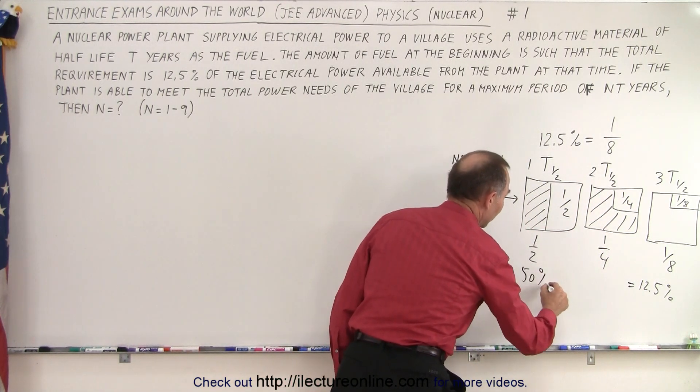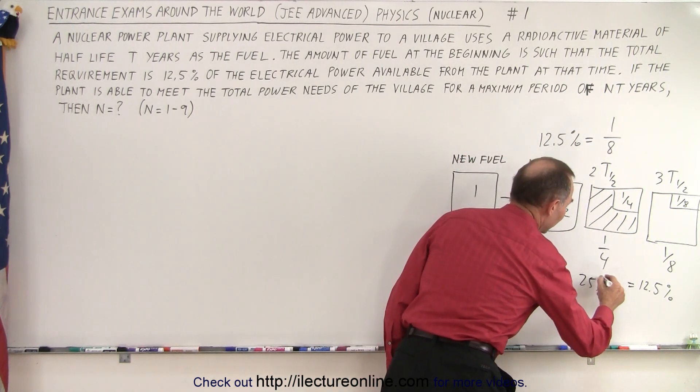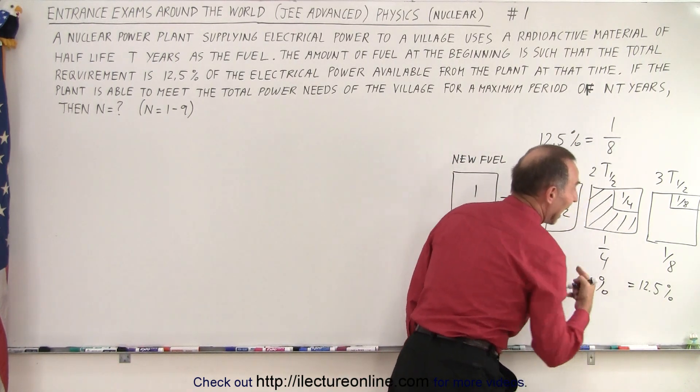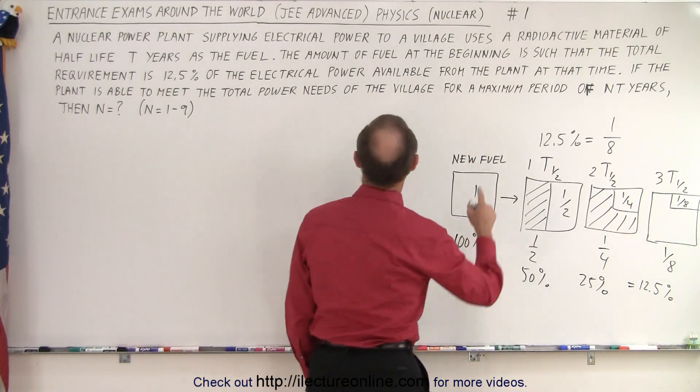This means your power output has gone down from 100 percent down to 50 percent, down to 25 percent, all the way down to 12.5 percent after three half-lives.